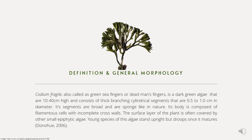Codium fragile, also called green sea fingers or dead man's fingers, is a dark green algae that is 10 to 40 centimeters high and consists of thick, branching cylindrical segments that are 0.5 to 1 centimeter in diameter. Its segments are broad and sponge-like in nature. Its body is composed of filamentous cells with incomplete cross walls. The surface layer of the plant is often covered by other small epiphytic algae.